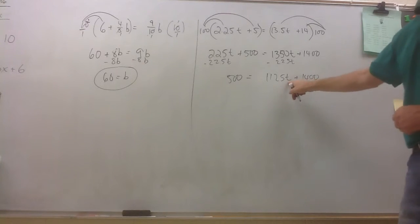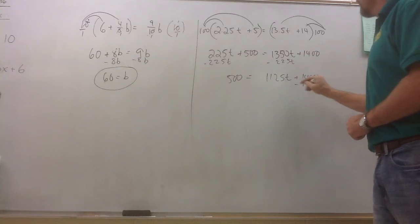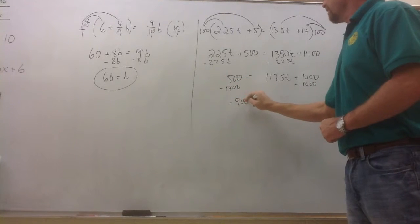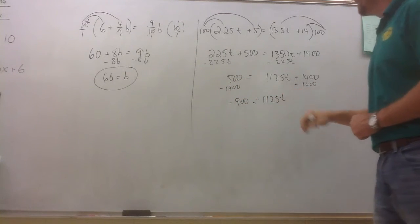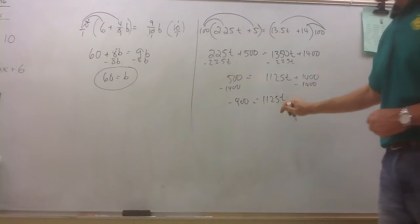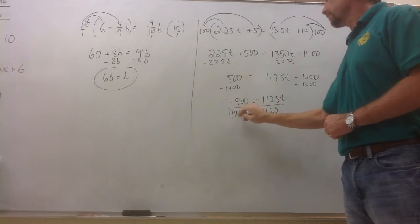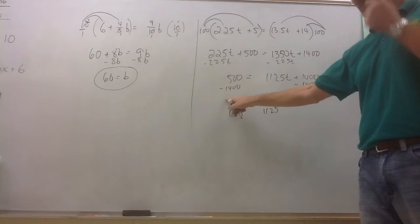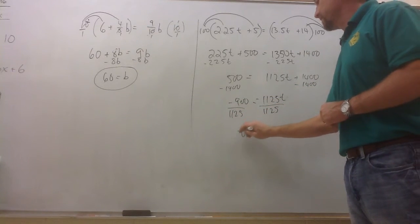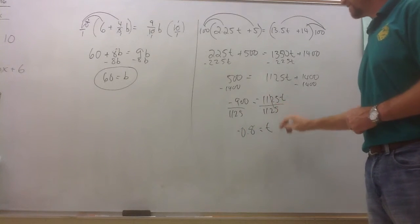We're trying to get this t by itself, so we're going to subtract 1,400 from both sides of the equation. Negative 900 equals 11.25t. That's 11.25 times t. To undo multiplication, we're going to divide. Negative 900 divided by 11.25 gives you a negative 0.8. And your t is now by itself.